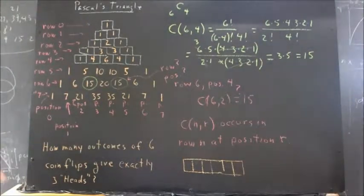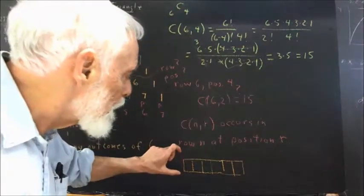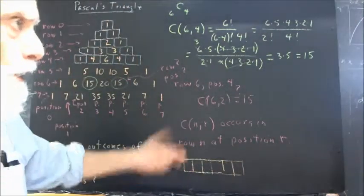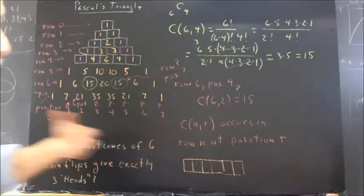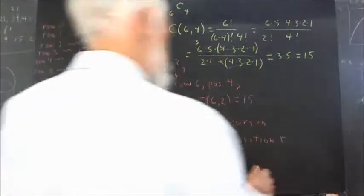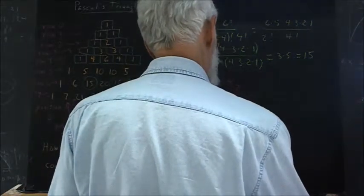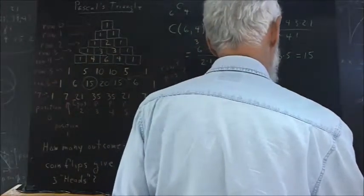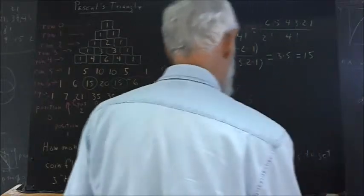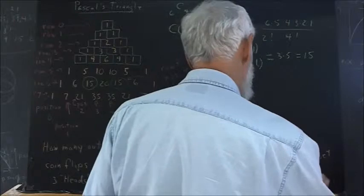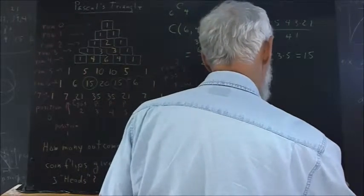...but we know that the number of combinations of three positions chosen out of six is C of six, three. So, it's going to be—you have C of six, three ways to get exactly three heads.